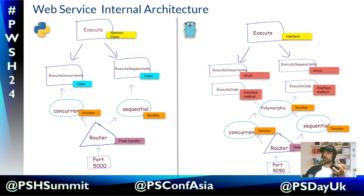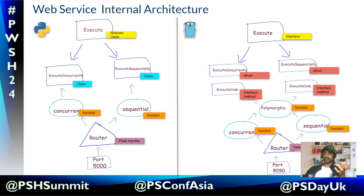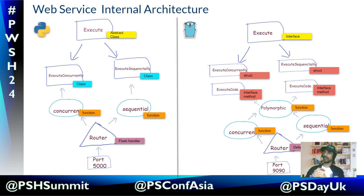In Go, according to the button pressed, the call goes to the concurrent function or the sequential function. One more thing to mention: we are using the concept of struct and interface in Golang. Struct is almost like a class in Python, and interface is like an abstract class — more precisely, interfaces are named collections of method signatures, and struct is a user-defined data type that combines other data types into a single type.